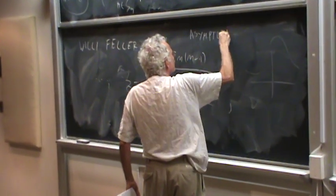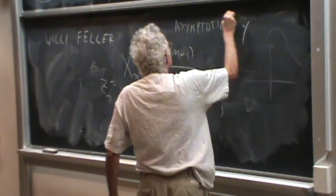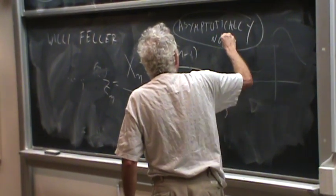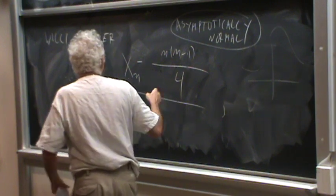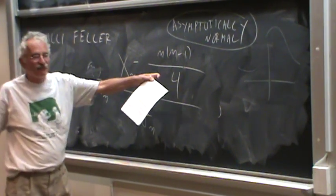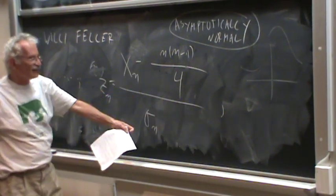Asymptotically normal, if you have a sequence of discrete probability distributions, and you do the obvious thing, subtract from the average, from the expectation, divide by the standard deviation,